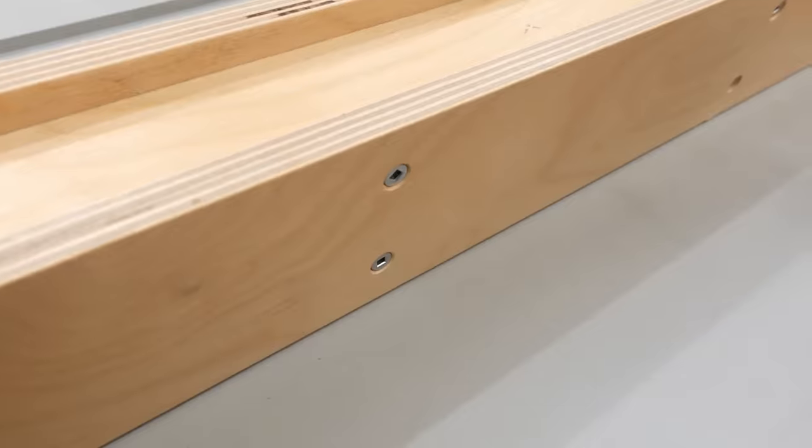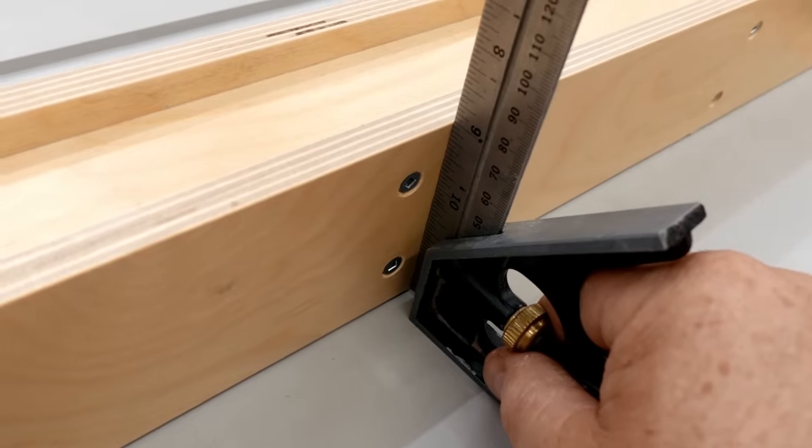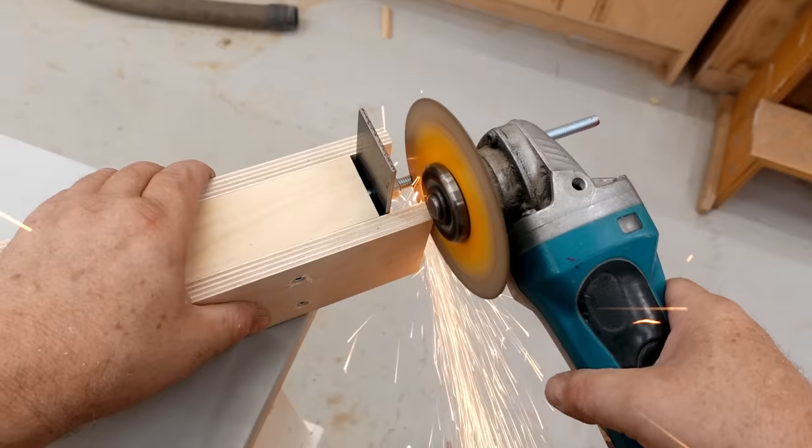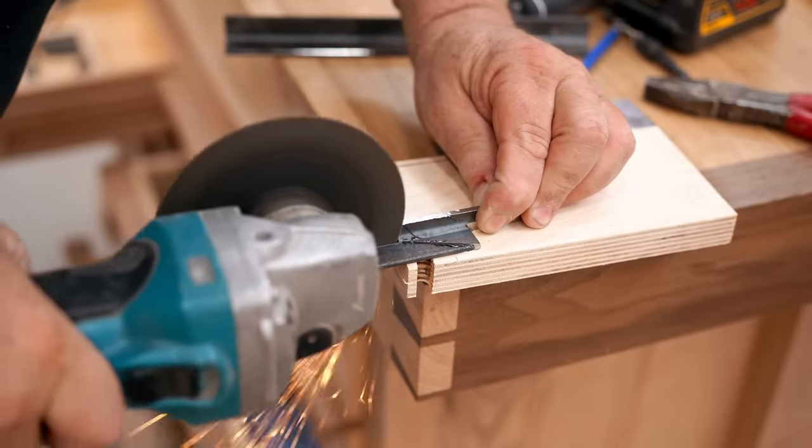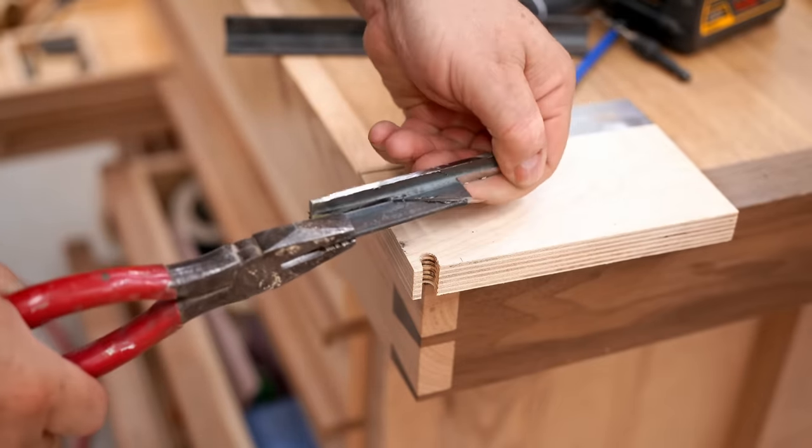After it's assembled, it's a good idea to check to make sure that it's square to the top of the table and make any adjustments as needed. Although wood is perfectly fine, I decided to make my pointer from a piece of angle iron.